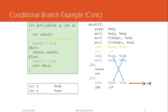The else part executes if x is less than y — it computes y minus x using EAX = EAX - EDX, with operands reversed compared to the then part. We do not need an extra move here as we did in the then block. Finally, the direct jump instruction takes us to label L8 where LEAVE executes and the function returns.